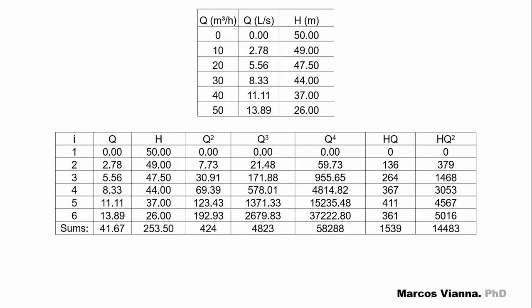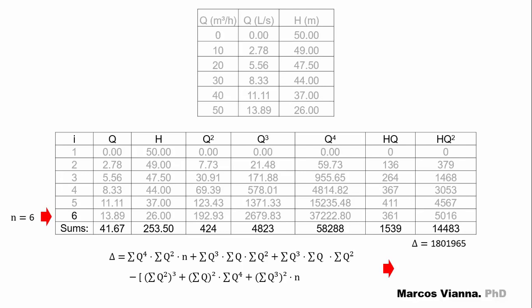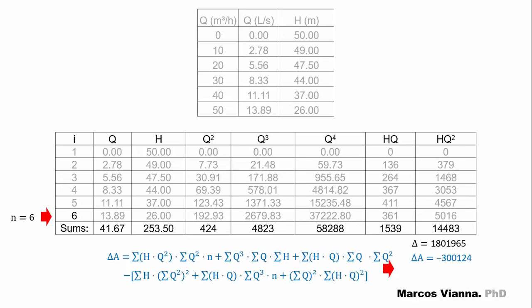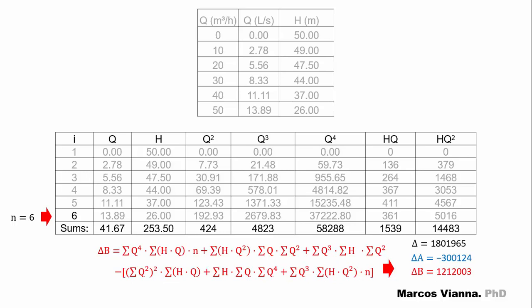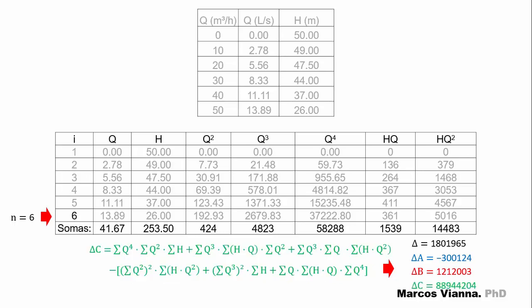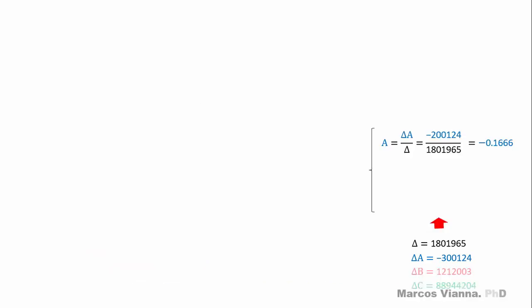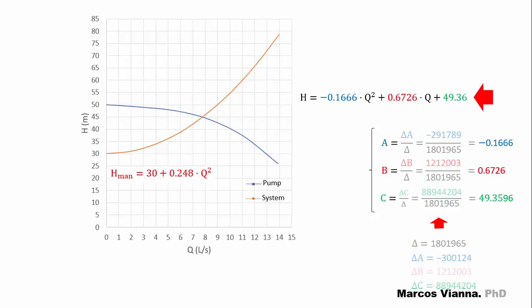Now we, or should I say Microsoft Excel, can calculate the corresponding values of delta, delta a, delta b, and delta c. With these values, we find a, b, and c. Here is the expression that we were looking for.